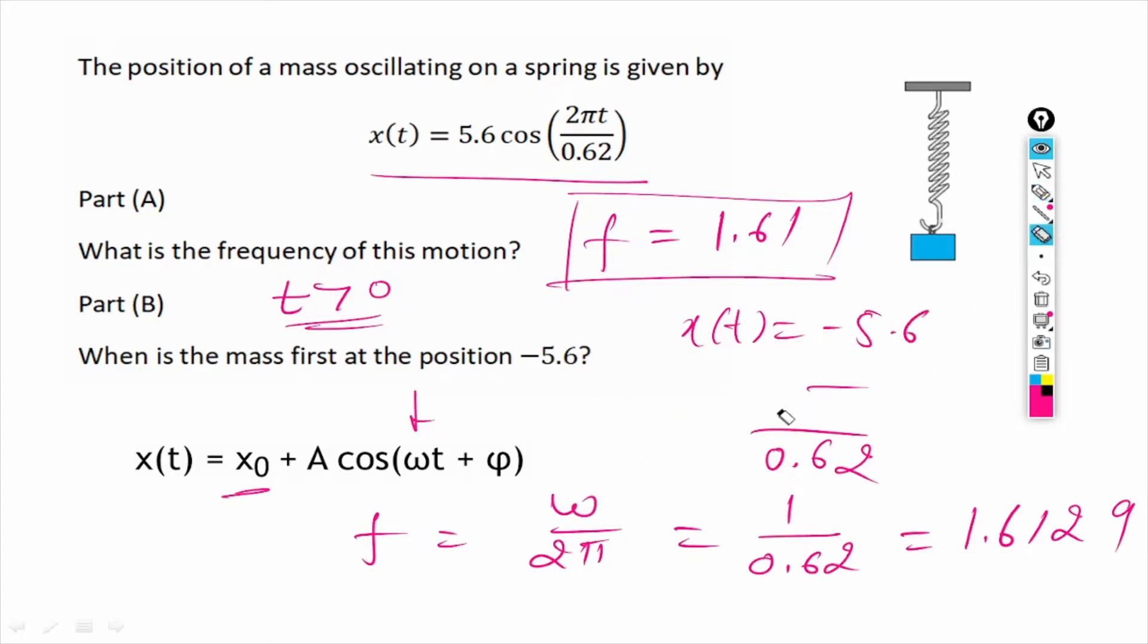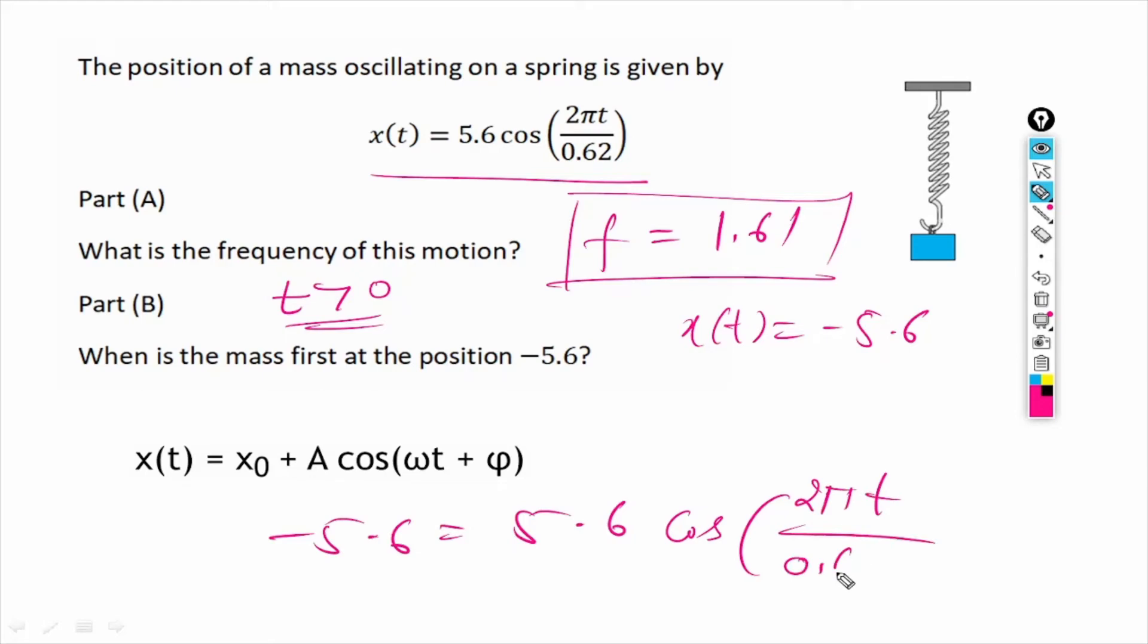So we want to find the minimum positive value of t such that x(t) is minus 5.6. So to do that, we can put x equal to minus 5.6. So that way we will have minus 5.6 equals 5.6 cos(2πt divided by 0.62).